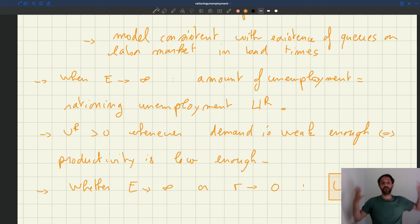All right, so now we've seen a model in which unemployment doesn't disappear when either the effort goes to infinity or the recruiting cost goes to zero. So the model is consistent with queues of workers in bad times.